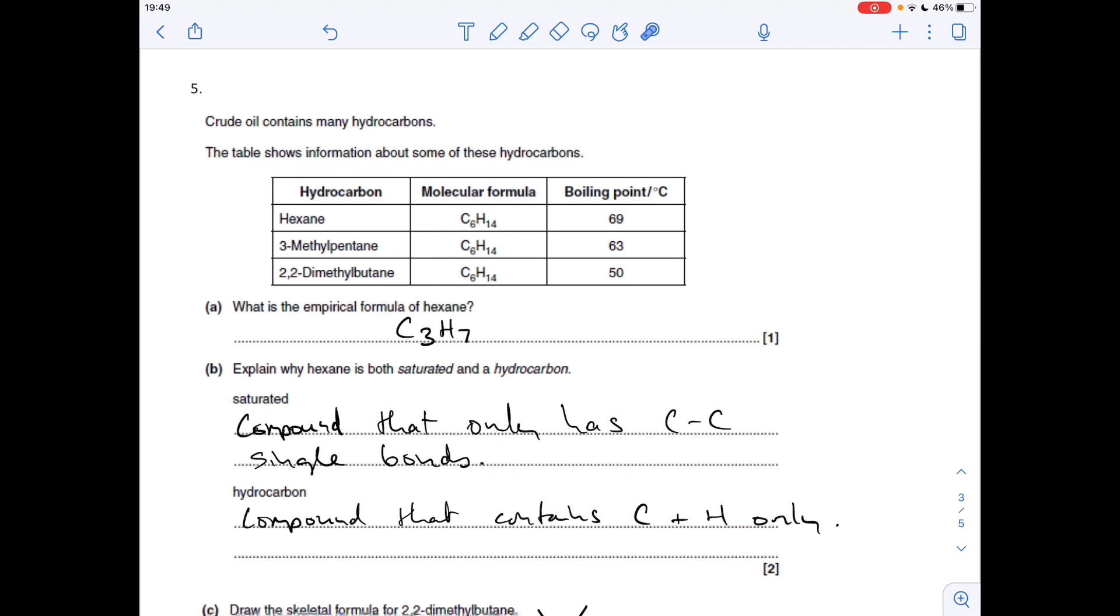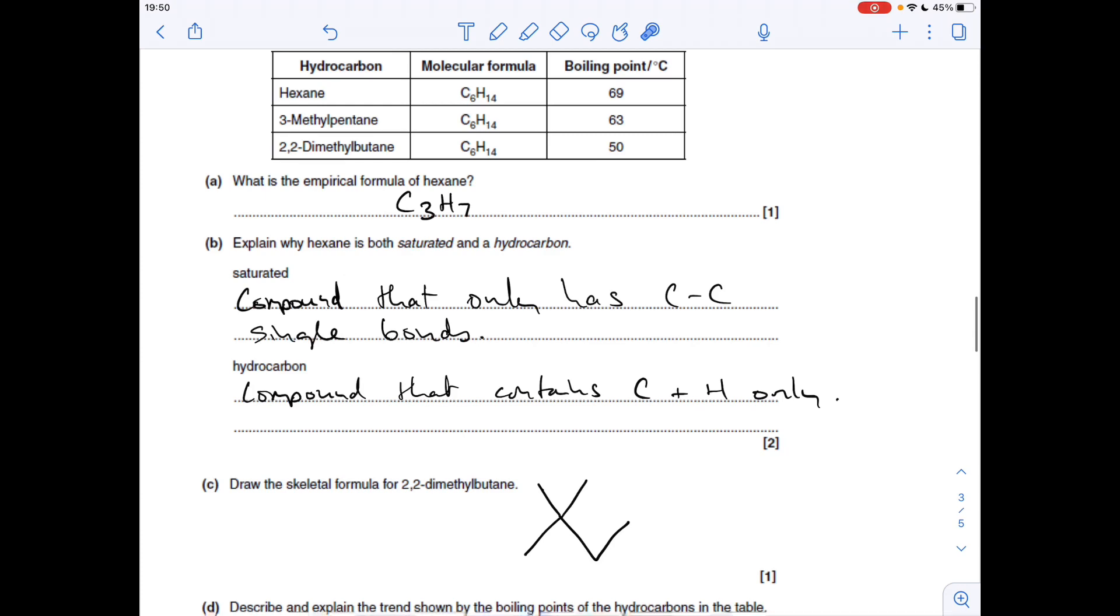We've got this long question five to finish with. First thing: what's the empirical formula of hexane? That can be simplified and still have whole numbers to C3H7. Part B: what's meant by the term saturated and hydrocarbon? Saturated is where all the carbon-carbon bonds are single bonds. Hydrocarbon: compounds that contain only carbon and hydrogen. It's really important you have only there. Skeletal formula for 2,2-dimethylbutane: you need a main long chain of four, and then two methyl groups on the second carbon.